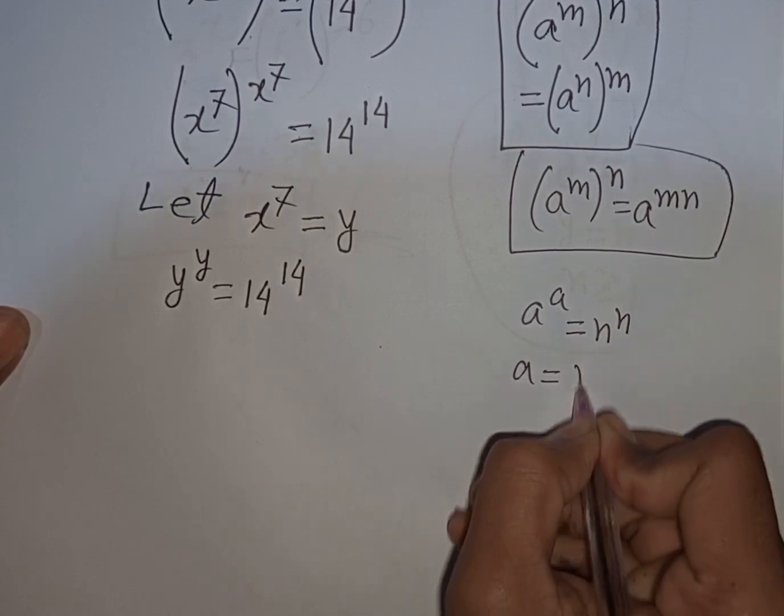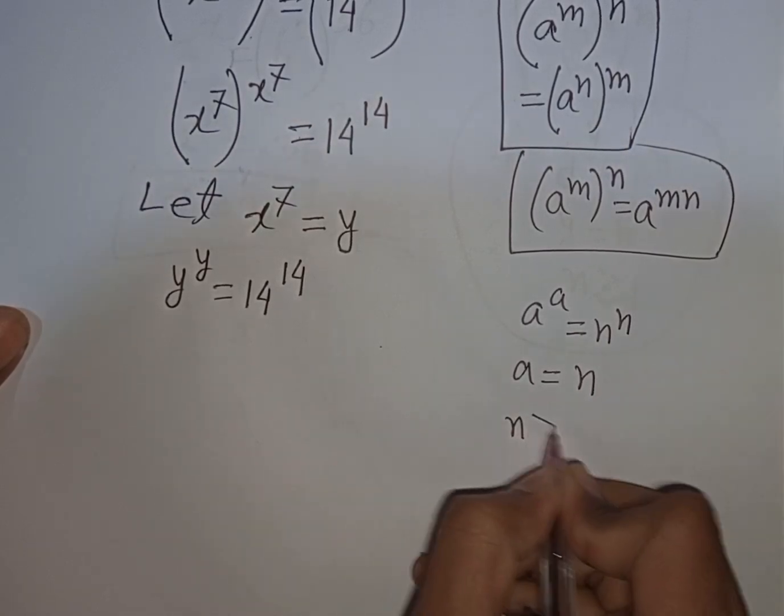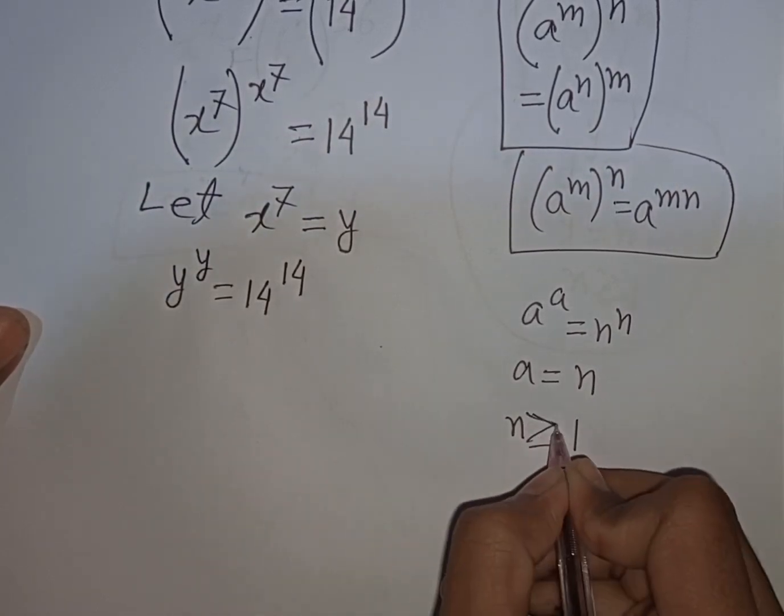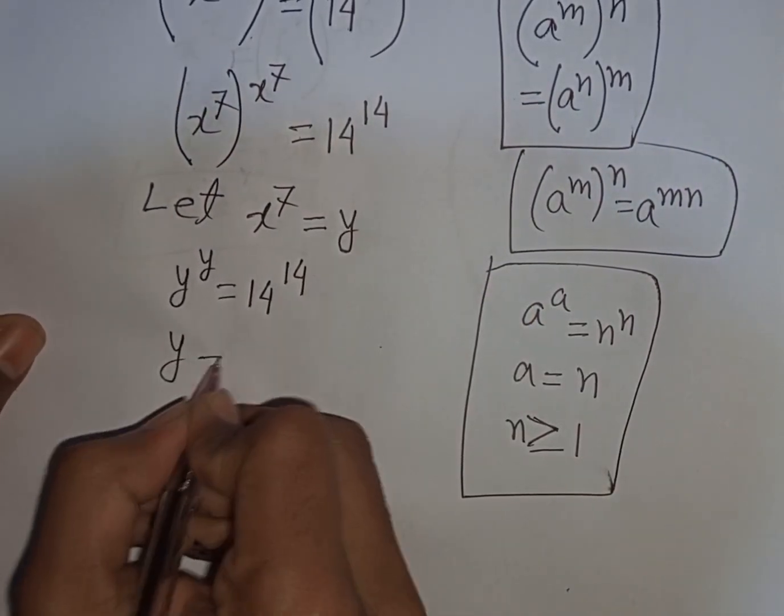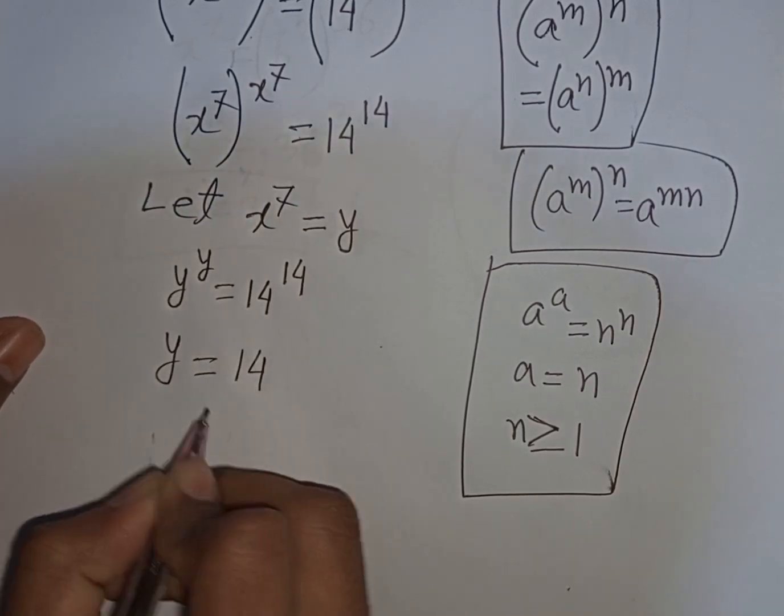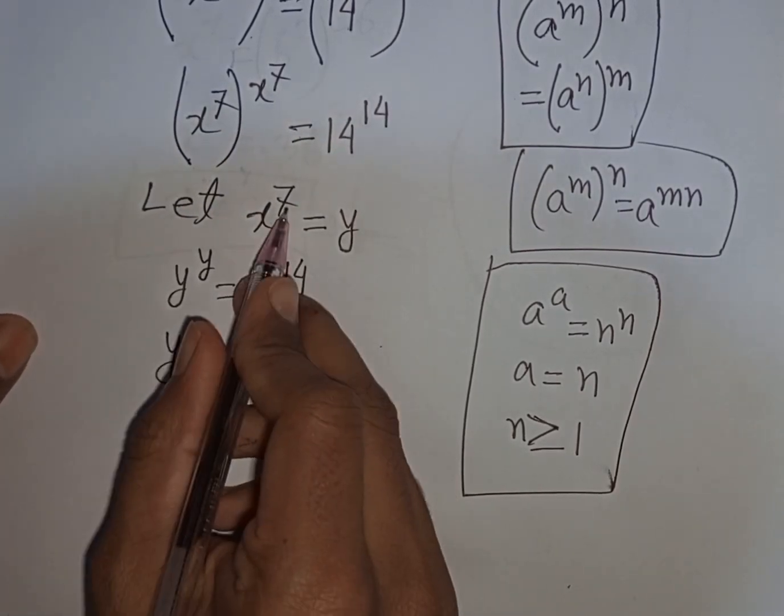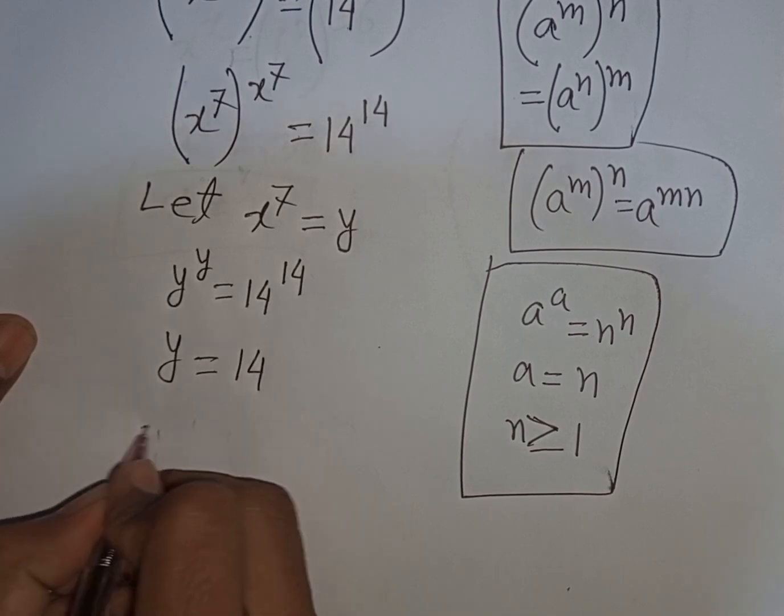According to this rule, you can compare: y will equal 14. But remember that y equals x^7, so x^7 equals 14.